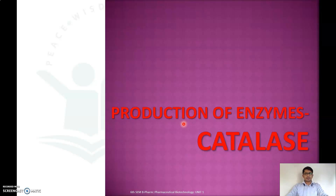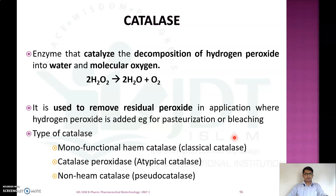In this video we will discuss the production of catalase enzyme. Catalase are enzymes that catalyze the decomposition of hydrogen peroxide into water and molecular oxygen. It is mainly used to remove residual peroxide in applications where hydrogen peroxide is added, for example for pasteurization or bleaching.